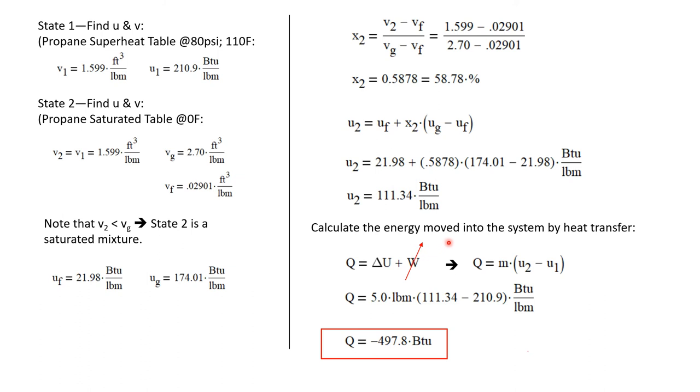Now let's calculate the energy moved. Actually, we assume that Q is positive if it moves energy into the system by heat transfer. But we know already that this is a cooling process. So I expect to get a negative value of Q. So the first law states that Q is delta U plus W. We've already said that W is zero. So I can rewrite the heat transfer Q is just the mass times the change in internal energy.